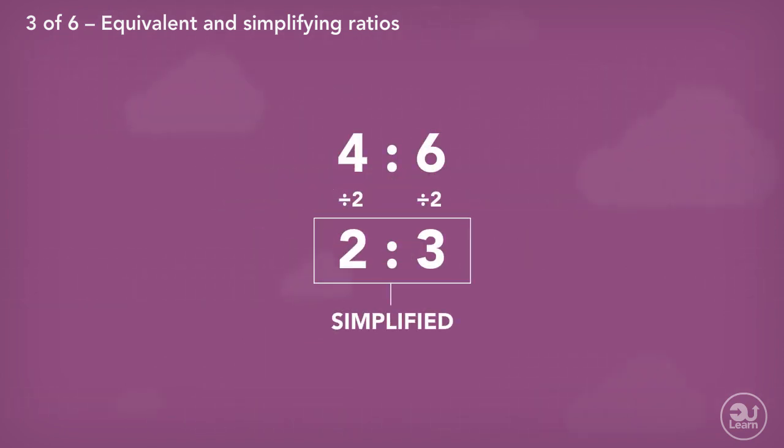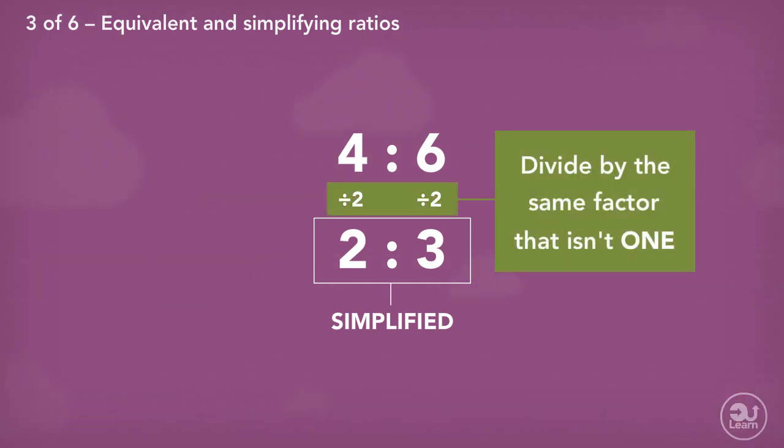This is a simpler version of the first ratio, as there are still equal parts that represent the same amount of blue and yellow, but shown with less equal parts. All we had to do was divide both parts of the same factor that isn't one to simplify the first ratio.